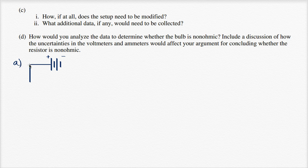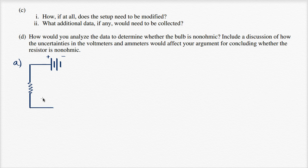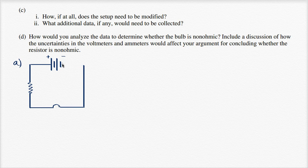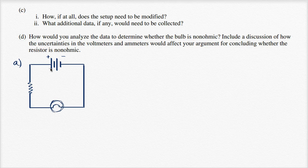I'll place the resistor and the incandescent light bulb in series in the circuit. To show it's a variable power source, I put an arrow across the power source symbol. So this is the basic circuit — power source, resistor, and light bulb all connected in series.